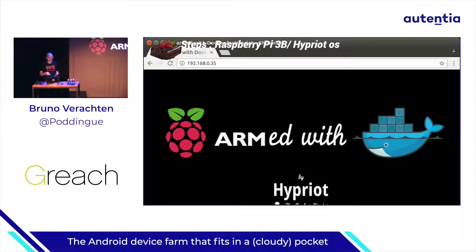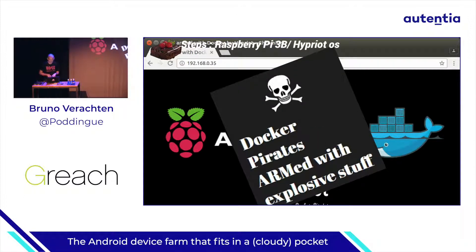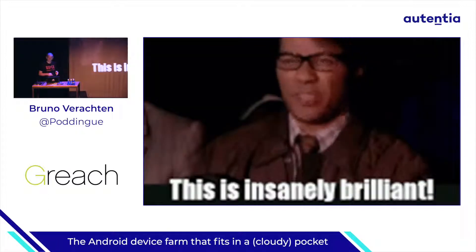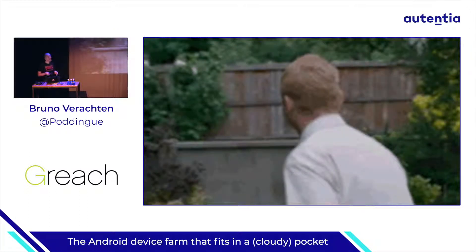Later on, I discovered another distro called HypriotOS. The guys behind that distro called themselves the Docker Pirates, expressing their rebellious and anti-establishment attitude. As most people were only concerned with Docker on big servers, they asked themselves how to use container technology on really small devices. HypriotOS is a minimal Debian-based operating system optimized to run Docker. It makes it dead easy to use Docker on any Raspberry Pi — just download and flash a prepared SD image. From start to finish, it takes less than five minutes to get started with Docker Compose, Docker Swarm, or Docker Machine on Raspberry Pi.